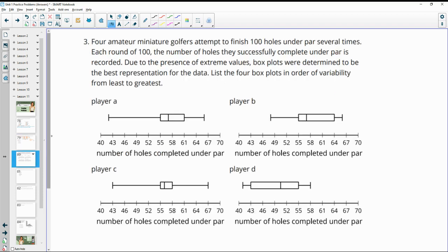Number three, four amateur golfers attempt to finish 100 holes under par several times each round of 100. The number of holes they successfully complete under par is recorded. Due to the presence of extreme values, they used box plots to determine the best representation of the data. List the four box plots in order of variability from least to greatest. So when we look at a box plot for variability, I like to look at how wide the middle part is, the IQR, right?